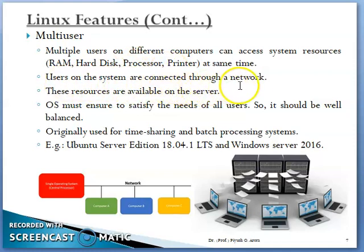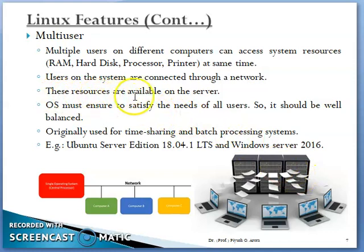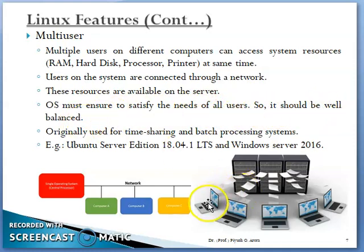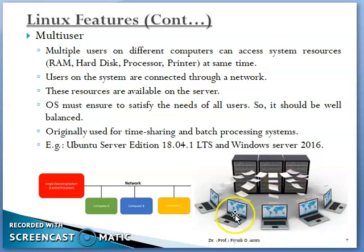Users on the system are connected through a network — network line ki madad se, fix cables ki madad se, client machines ko server ke saath join kiya jata hai. These resources are available on the server — sabhi resources server per hi available rehti hain. Always must ensure to satisfy the needs of all the users, so it should be well balanced. Agar koi bhi user request karta hai at any moment of time, toh server ki ye responsibility hai ki woh sabhi users ko equal yaani ki fair amount of time de. Server kabhi aisa nahi karega ki is user ko zyada time de aur is user ko ignore kare — server gives equal amount of time to each and every user.